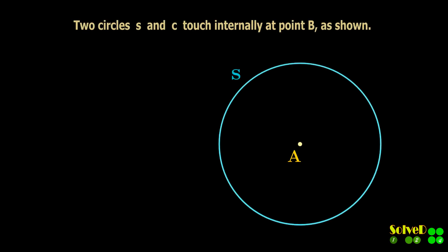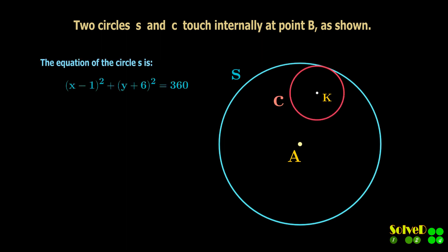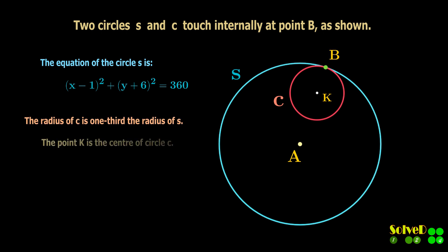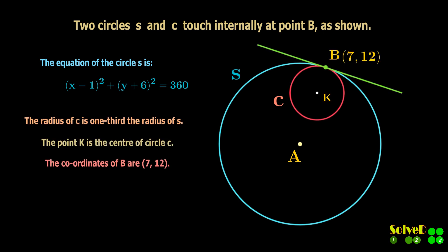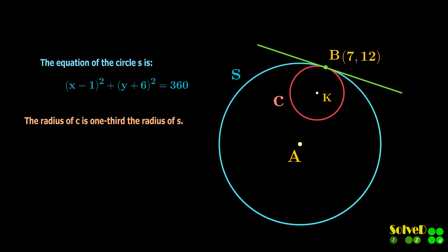Two circles touch internally at point B, as shown. The equation of the circle S is given. The radius of circle C is one-third of the radius of S. The point K is the center of circle C. The coordinates of point B are given. Find the equation of circle C.